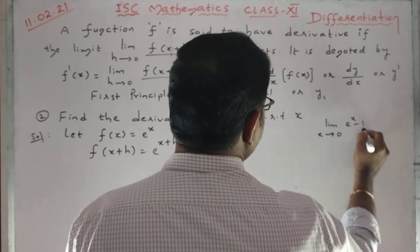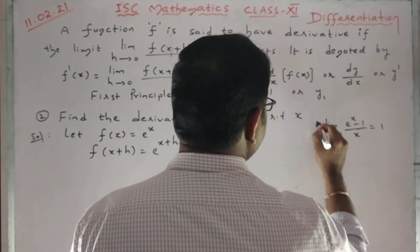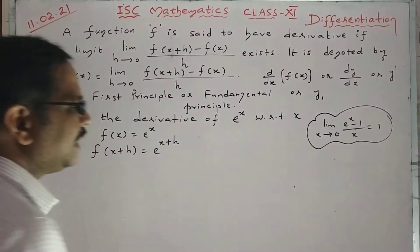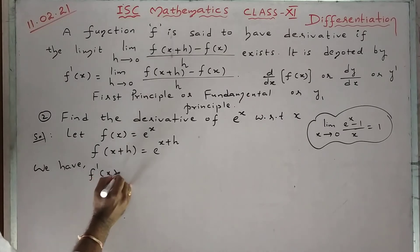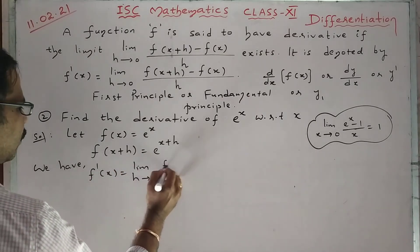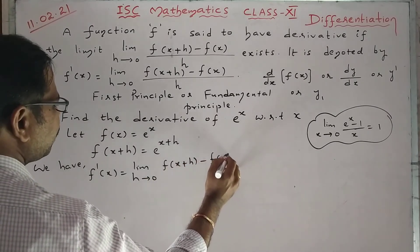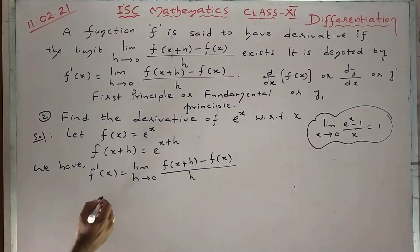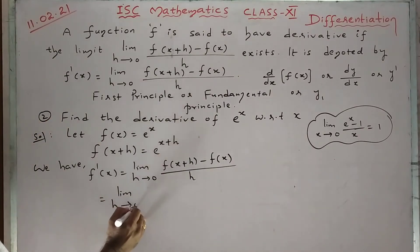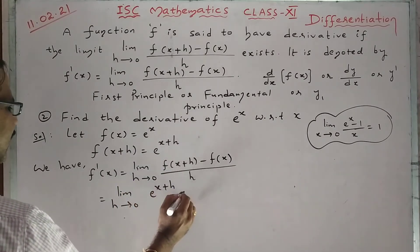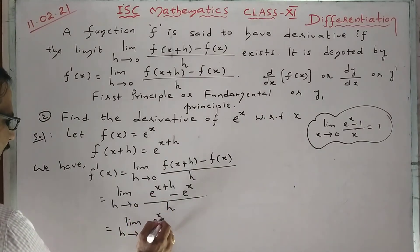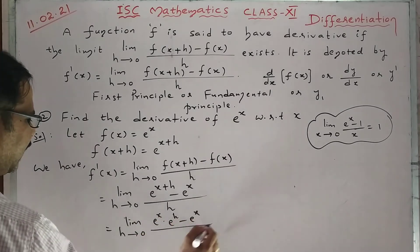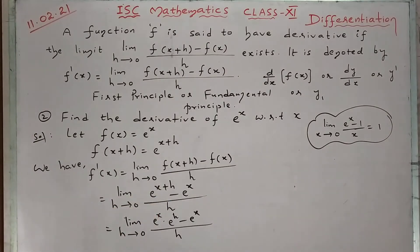Now applying the first principle: f'(x) = limit h→0 of [f(x+h) - f(x)] / h. Substituting: limit h→0 of [e^(x+h) - e^x] / h. This can be written as limit h→0 of [e^x · e^h - e^x] / h, using the rule a^(m+n) = a^m · a^n. Taking e^x common: limit h→0 of e^x · (e^h - 1) / h.